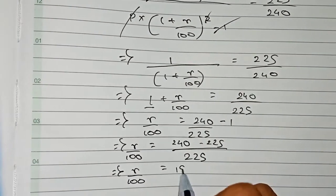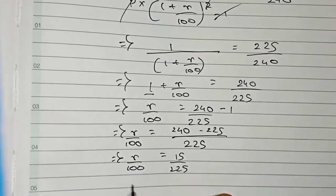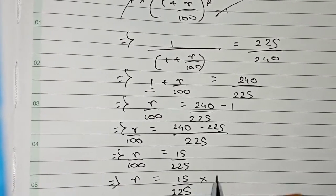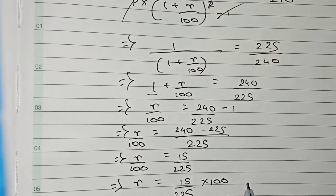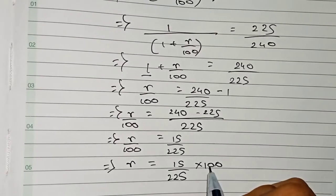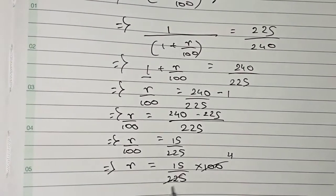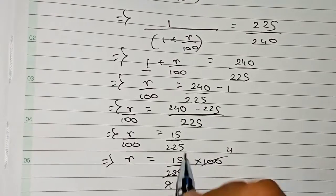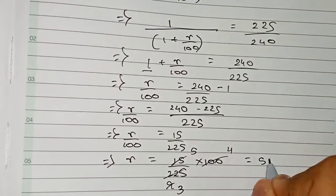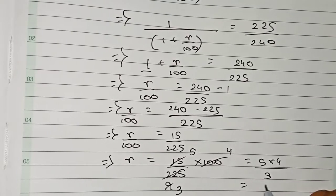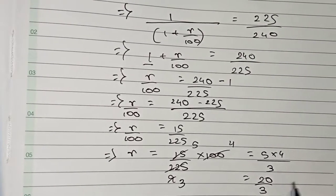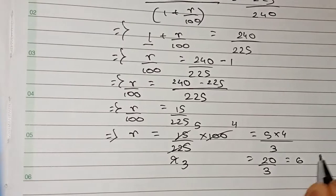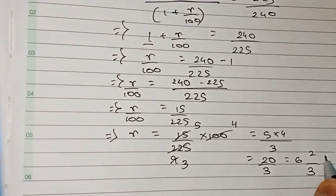So r = (15/225) × 100. Simplifying: 100 and 225 cancel by 25 giving 4 and 9; then 9 and 15 cancel by 3 giving 3 and 5. So r = (5 × 4)/3 = 20/3 = 6⅔%. The rate of interest is 6⅔%.